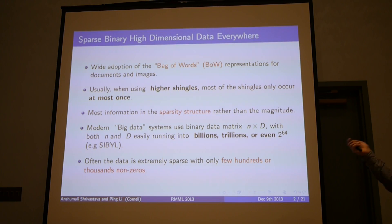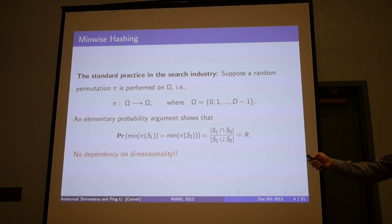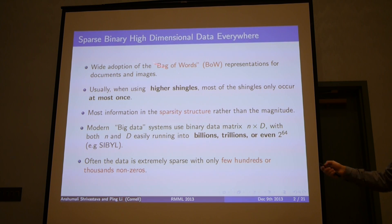The universe is usually very big, usually higher order shingles which are huge in number, and the documents typically have very few elements in it. So it usually only has hundreds or typically thousands of non-zeros and the dimension could blow up in billions or trillions. Often the data is extremely sparse with only a few hundreds or thousands non-zeros. Most of the information is actually contained in the sparsity structure of the vector rather than the magnitude.